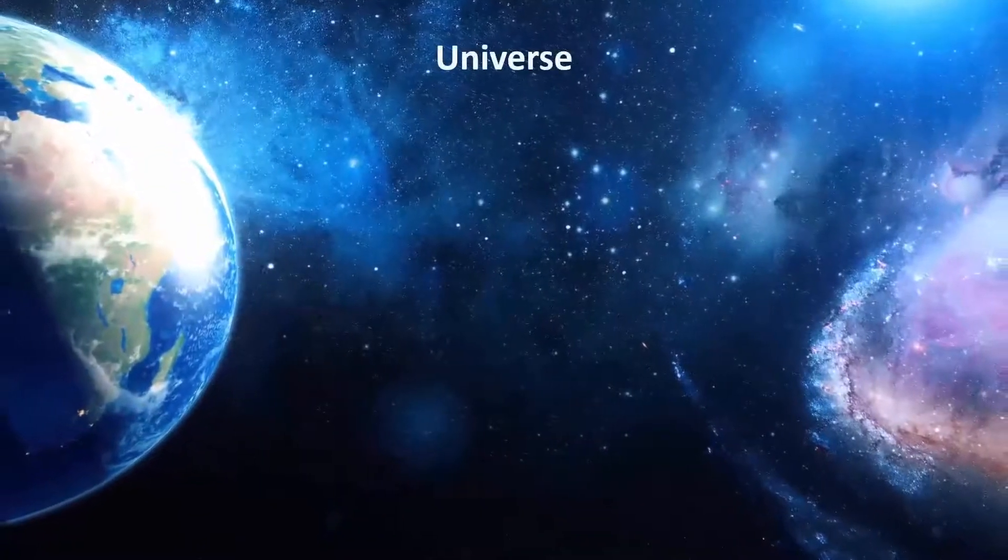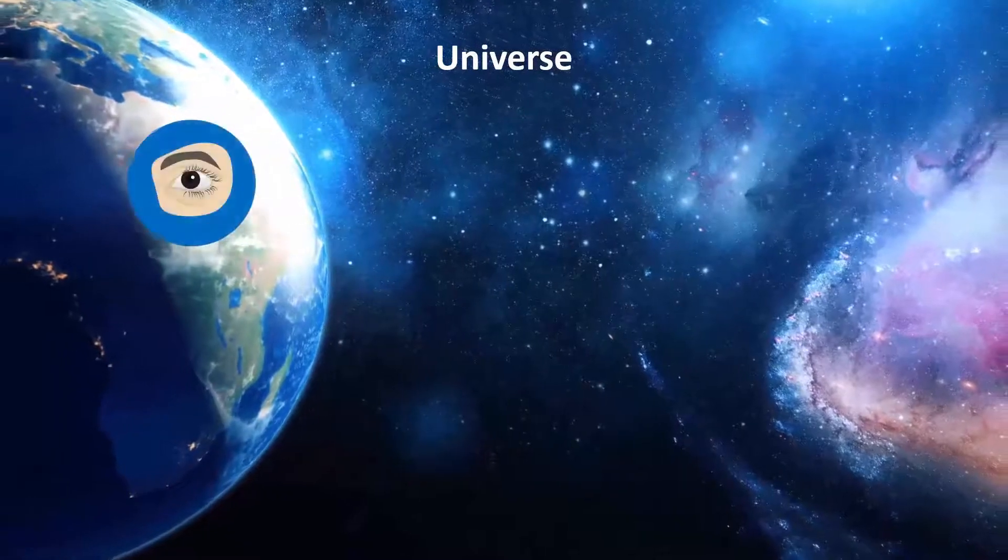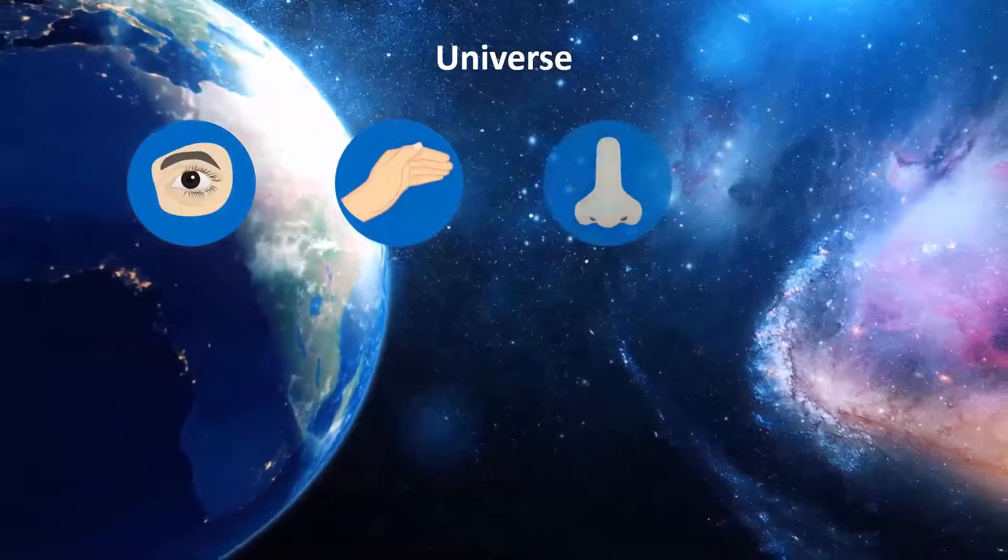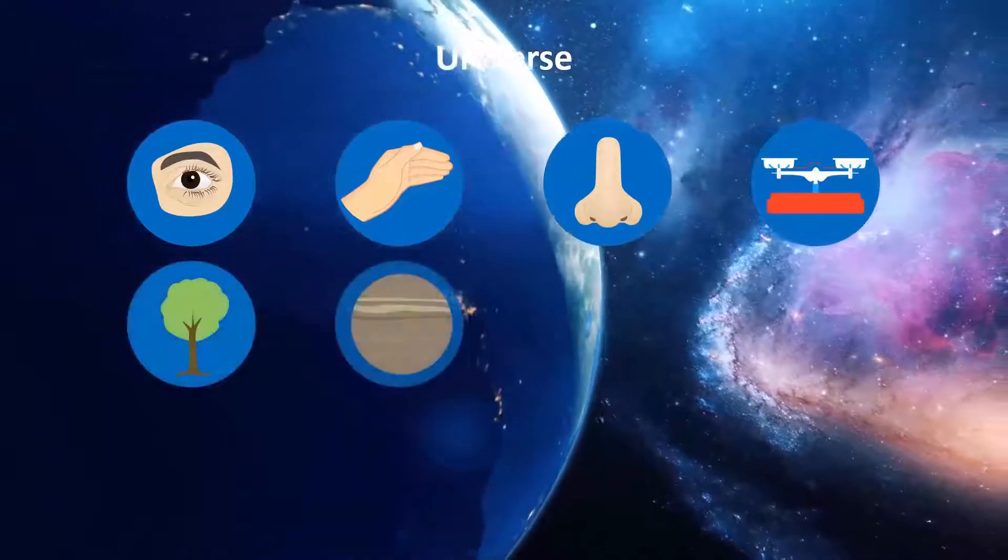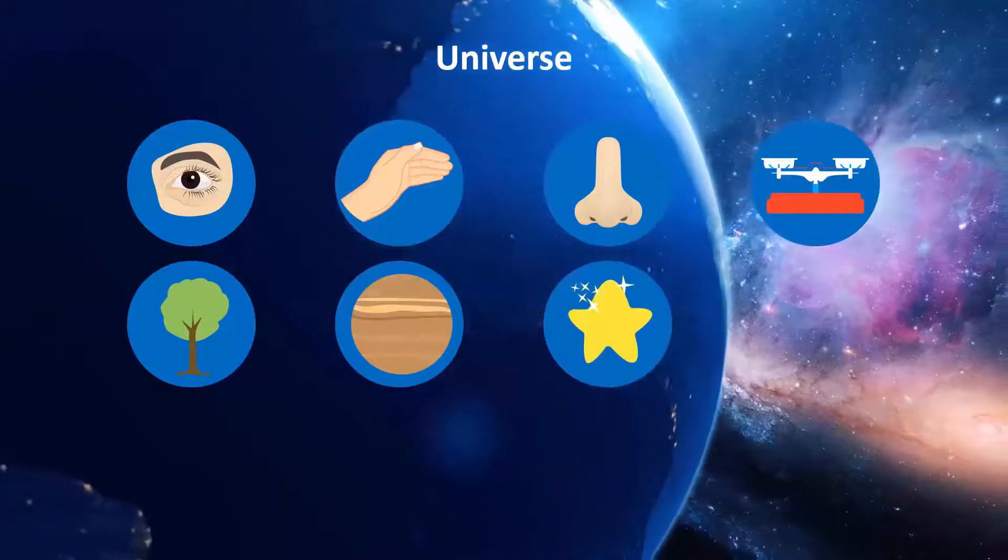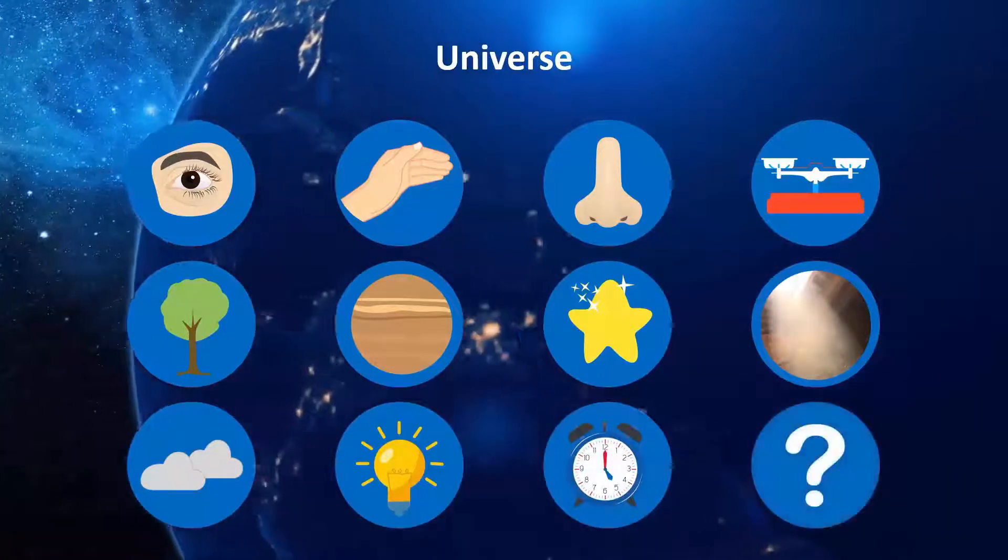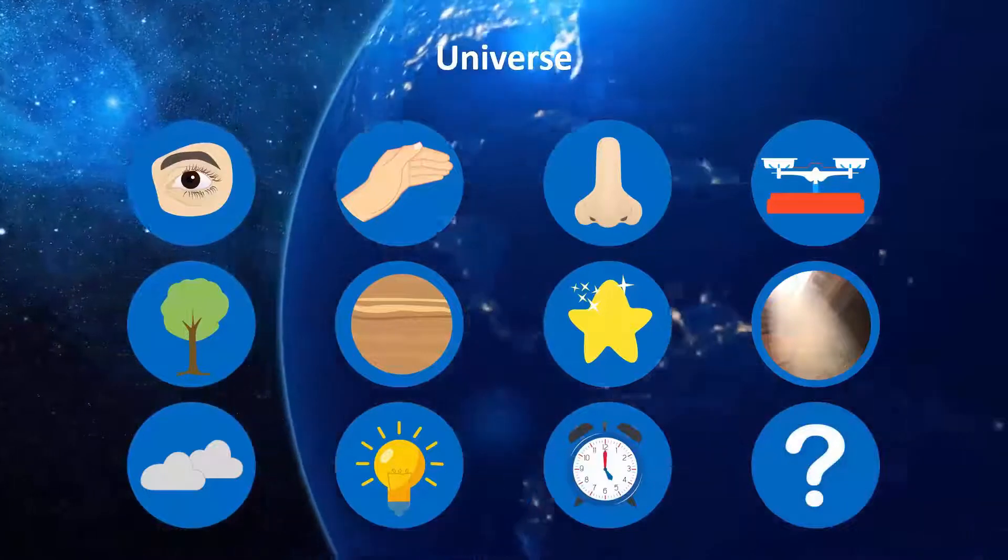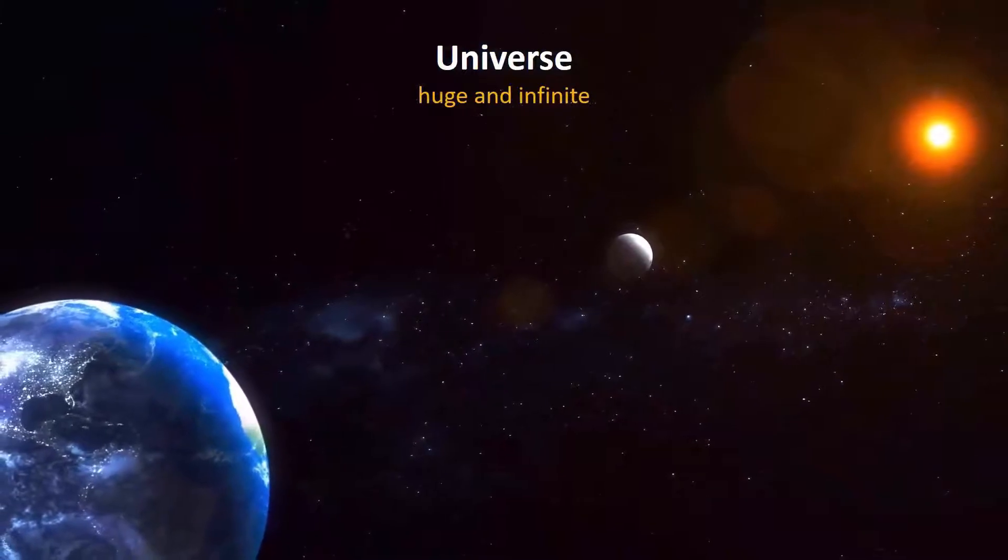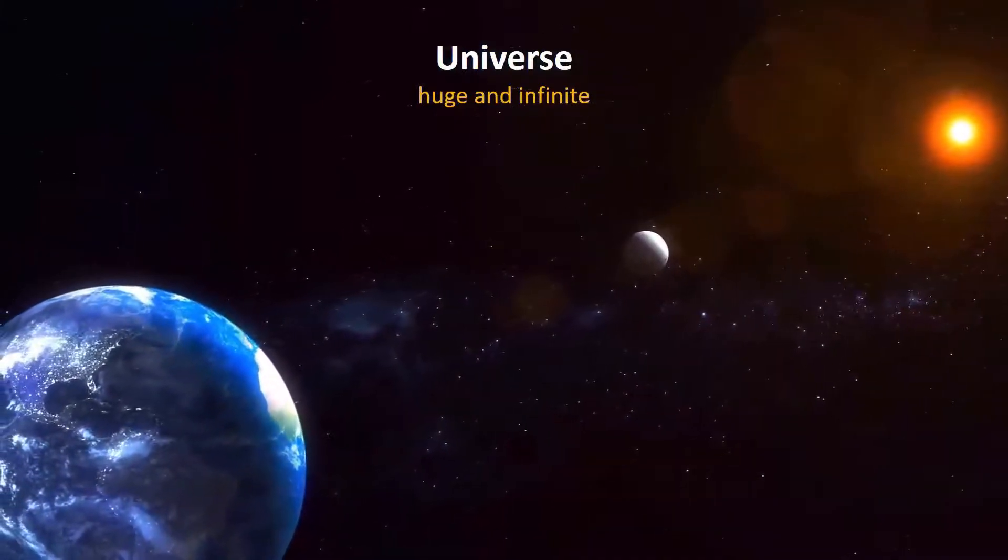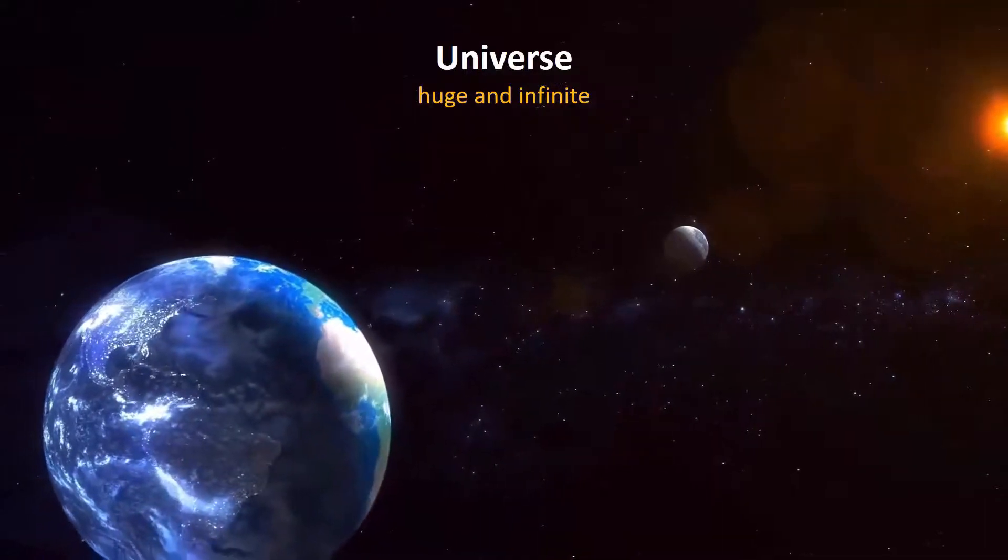This is our universe. The universe is everything we can see, touch, smell or measure. It includes plants, planets, stars, dust clouds, light, time and even objects which have not been discovered as yet. The universe is huge and infinite. It has no end. Our Earth is a very small part of this vast universe.